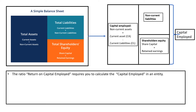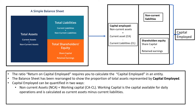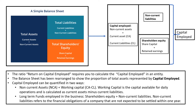The ratio return on capital employed requires you to calculate the capital employed in an entity. The balance sheet has been rearranged to show the proportion of total assets represented by capital employed. Capital employed can be quantified in two ways: one is by adding up non-current assets plus working capital, and the other is to look at the long-term funds employed in the business, which is shareholders' equity plus non-current liabilities.